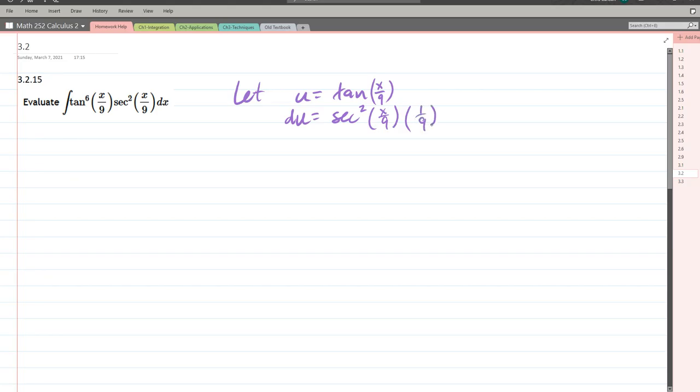We don't have a one-ninth, so we'll move that over with multiplication: 9 du equals secant squared of x over 9 dx. Now we're ready to make our substitution.